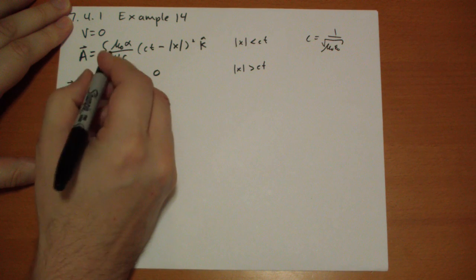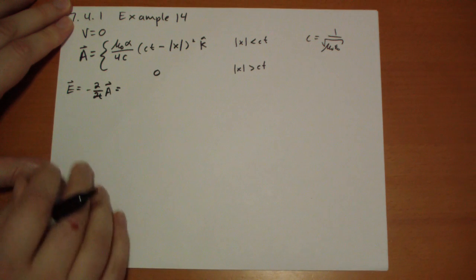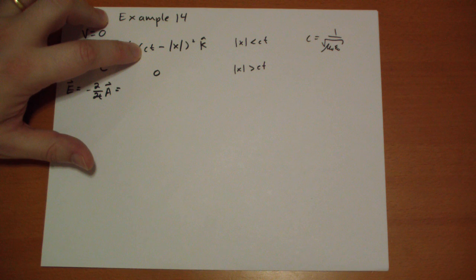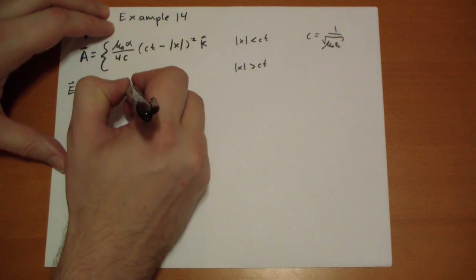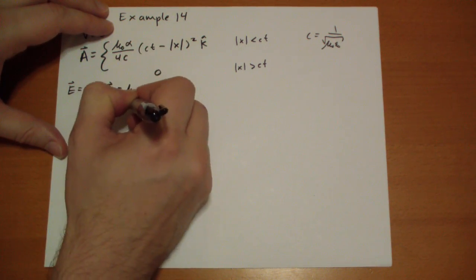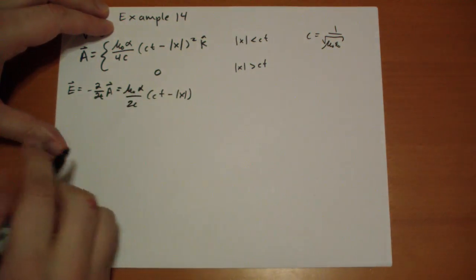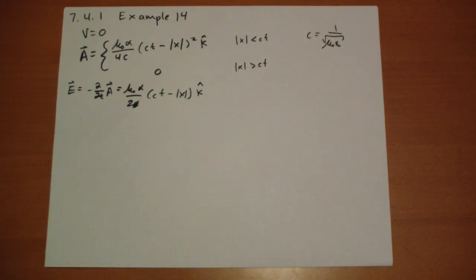So E vector equals minus the time derivative of A. There's only one component that depends on time. Oh, this is squared! Very good. Okay, so we pull out the 2. We have mu naught alpha over 2C, because we're pulling a C down from there. Keep the inside and multiply by C, so we cancel the C out altogether. And it's pointing in the k-hat direction. So we found the electric field.